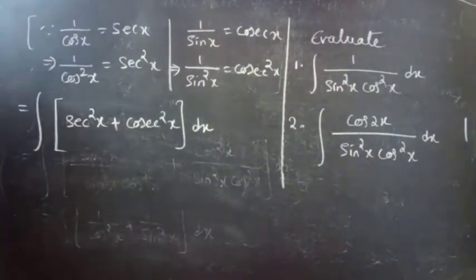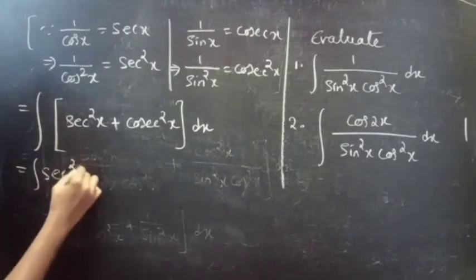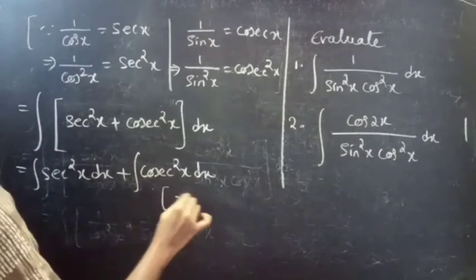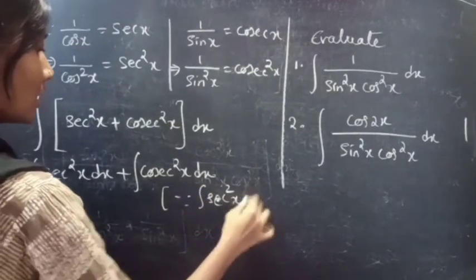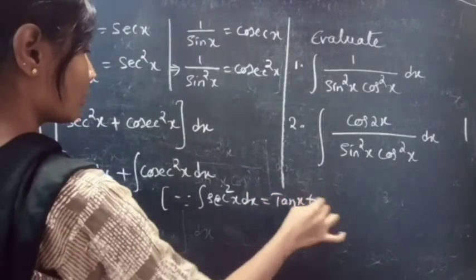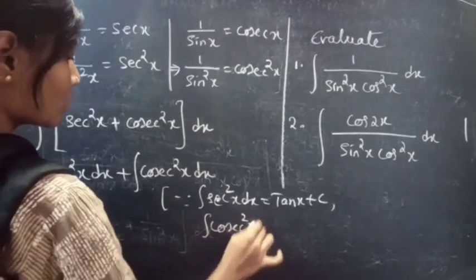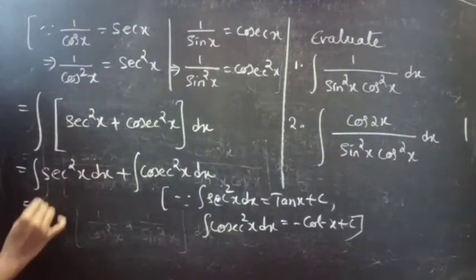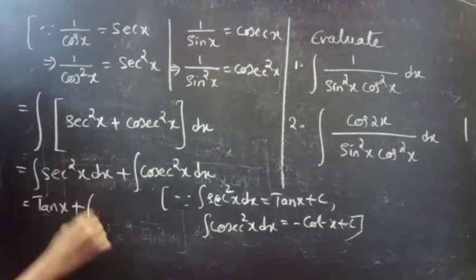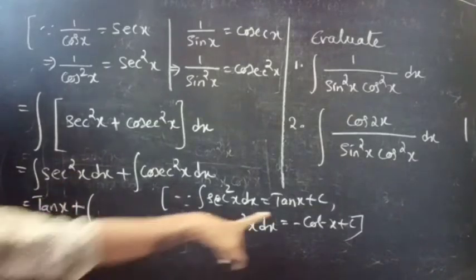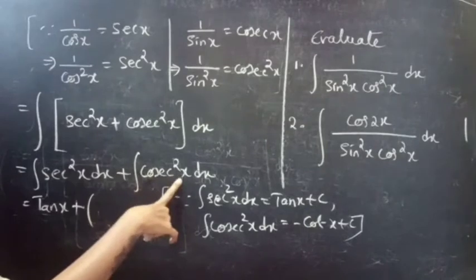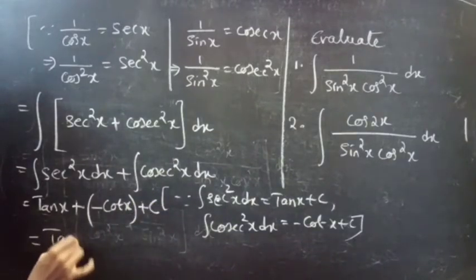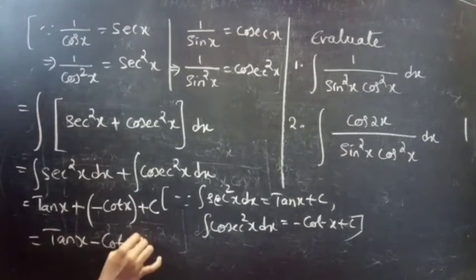This equals the integral of sec²x dx plus the integral of csc²x dx. We know that the integral of sec²x dx = tan x + c, and the integral of csc²x dx = -cot x + c. So combining these, we get tan x - cot x + c.